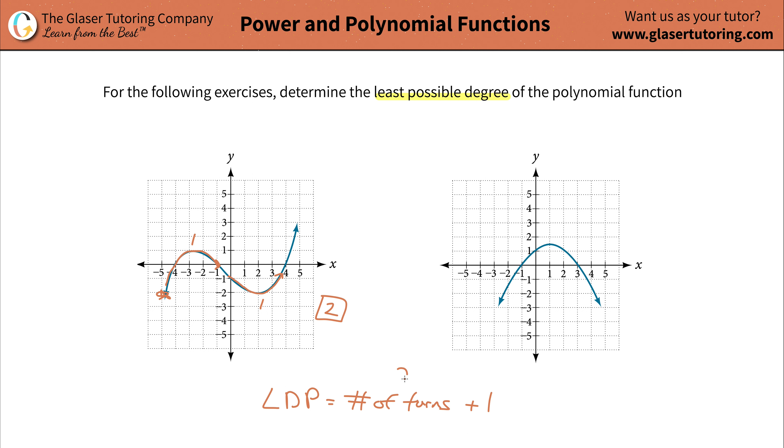So you're simply going to take two, add one to it, and you're going to come up with three. So that's going to be the least possible degree of this polynomial. We'll say that it's x cubed. It's not x cubed by itself, but it's some cubic function. But it's definitely going to be a three-degree polynomial.